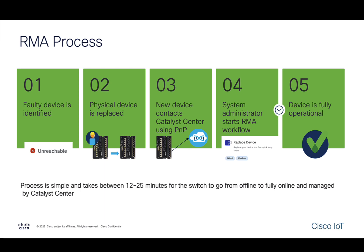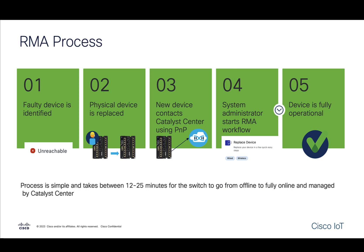An assistant administrator can then start the RMA workflow. In the RMA workflow, the administrator selects the faulty device, the new device, and schedules the task. When the task is completed, the device is fully operational and managed by Catalyst Center.